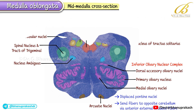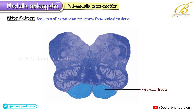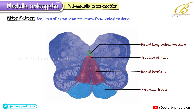In the white matter at the mid-medulla level, a sequence of paramedian structures runs from ventral to dorsal: pyramidal tracts, medial lemniscus, tectospinal tract, and the MLF.